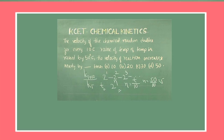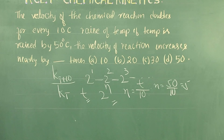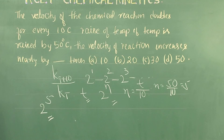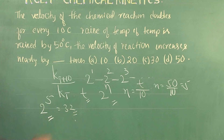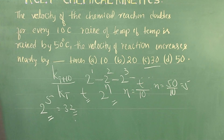As mentioned, for every 10°C raise the rate doubles. Therefore for a 50°C raise, the rate increases by 2⁵ = 32 times, which means the right answer is nearly 30. Therefore, C is the right option.